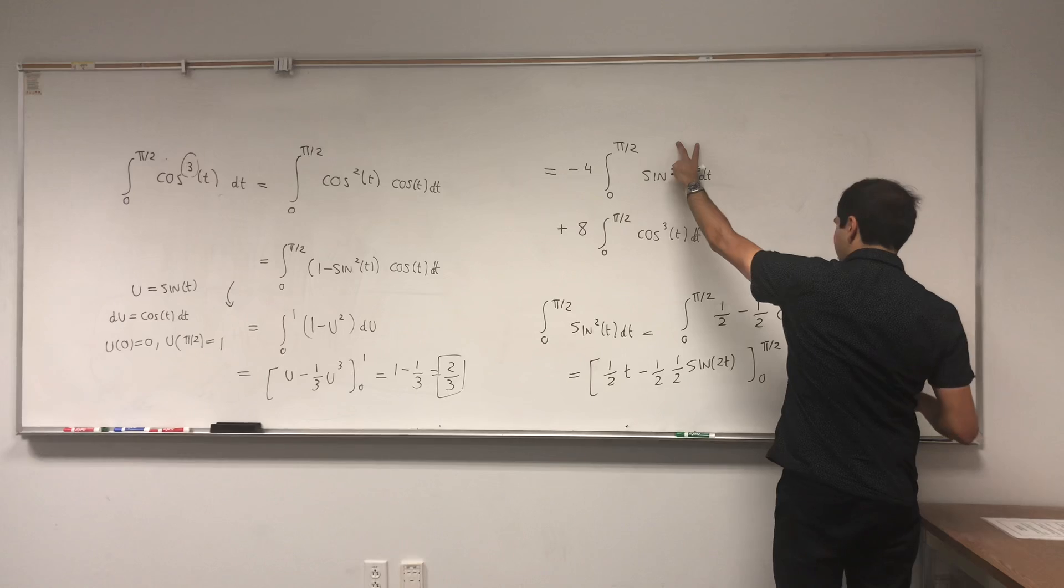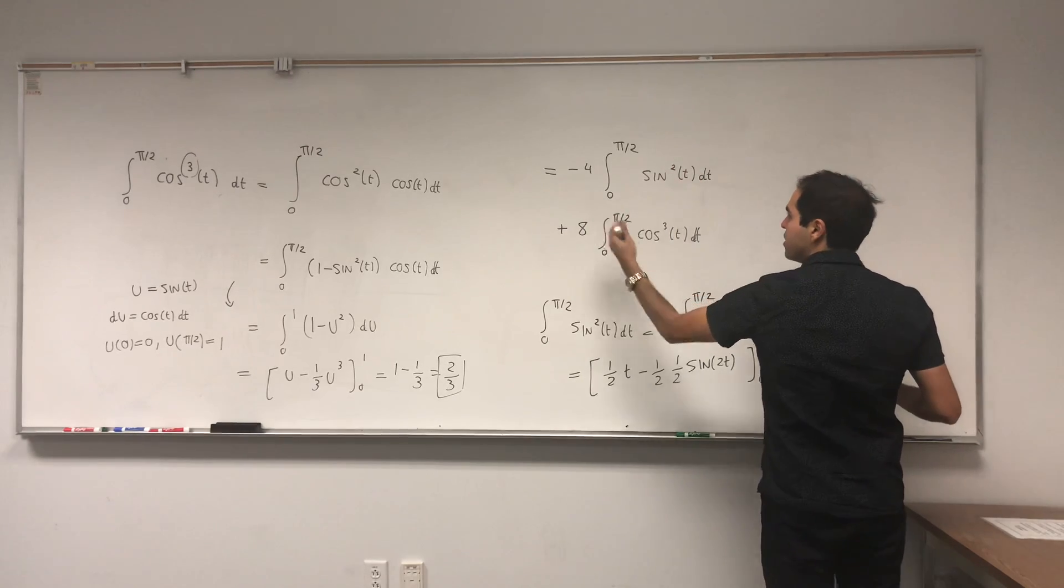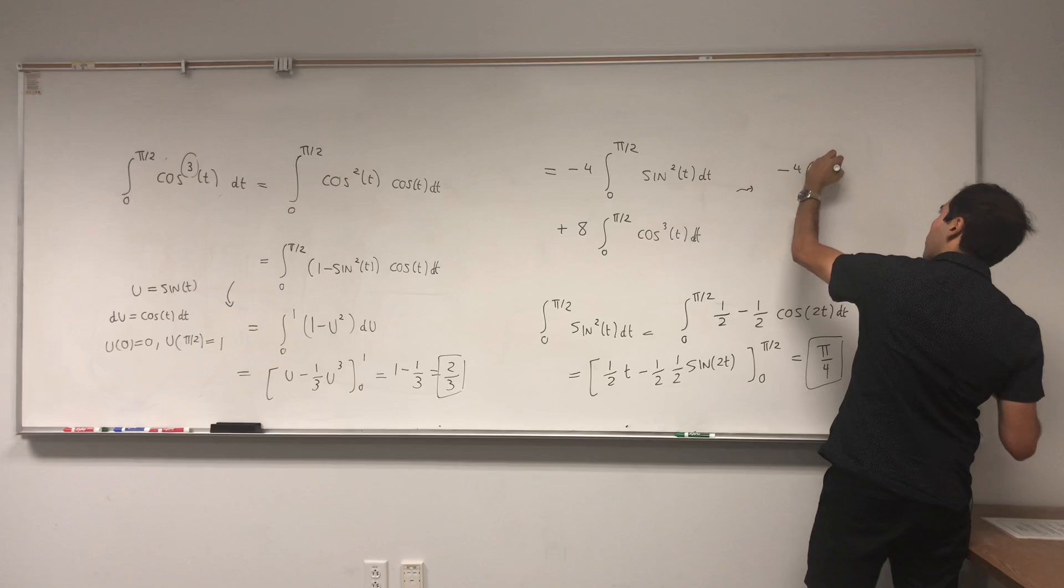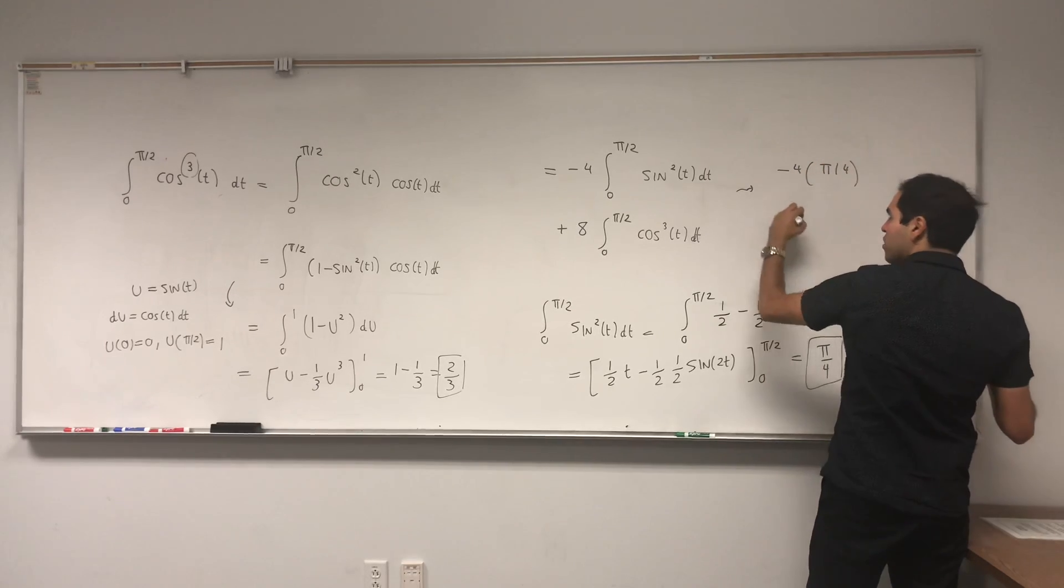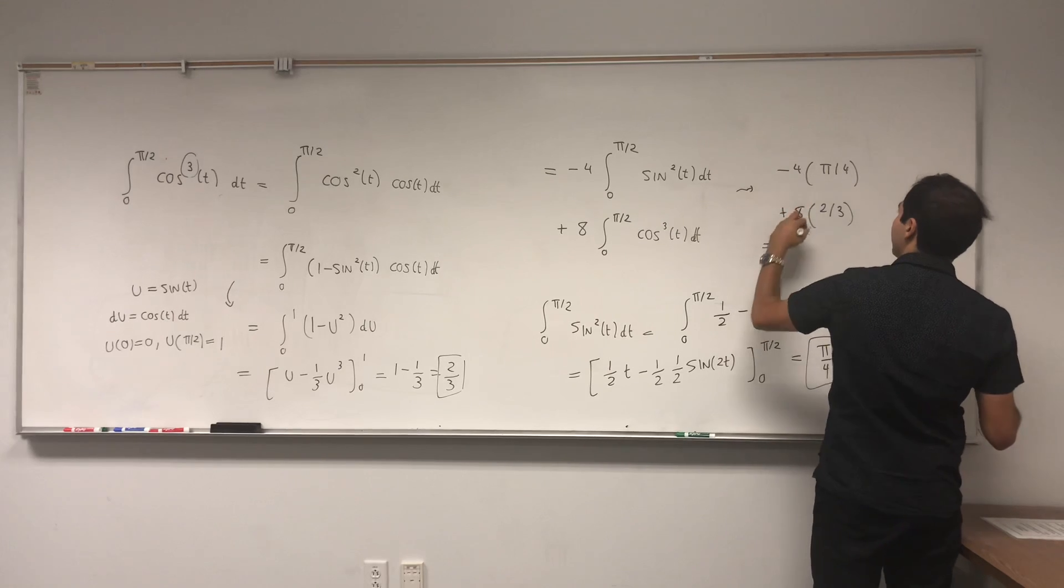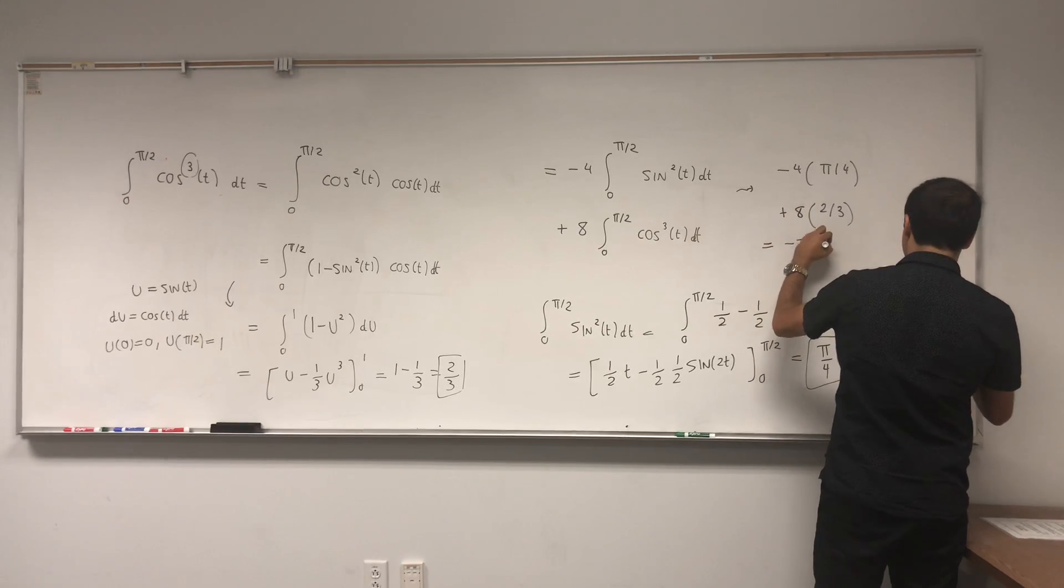Great! And we're almost done because we find that this thing is pi over 4, this thing is 2 thirds, so the answer becomes minus 4 times pi over 4 plus 8 times 2 thirds. And I think you get minus pi plus 16 thirds.